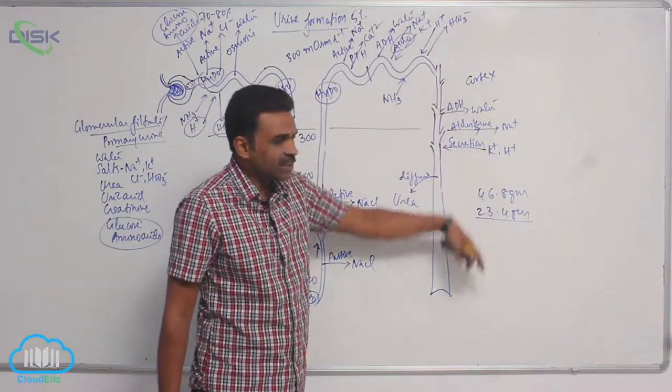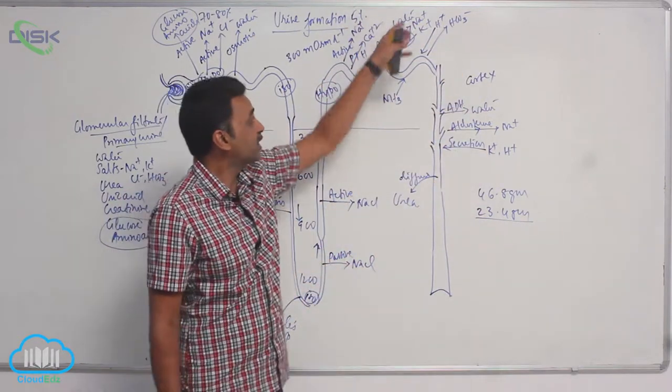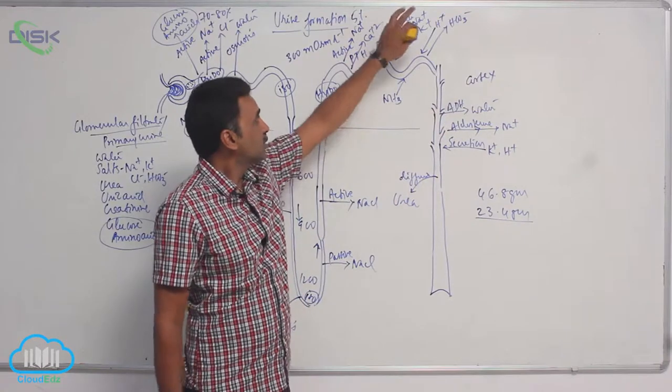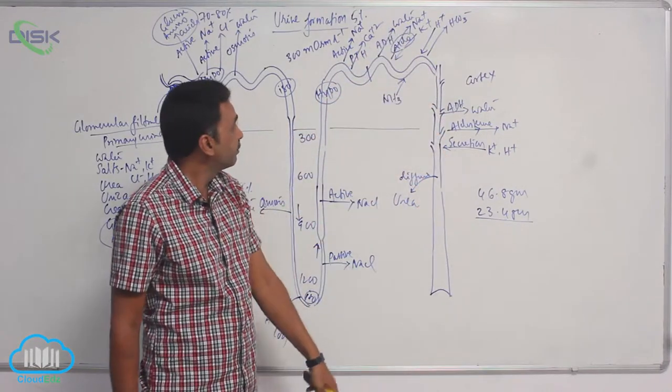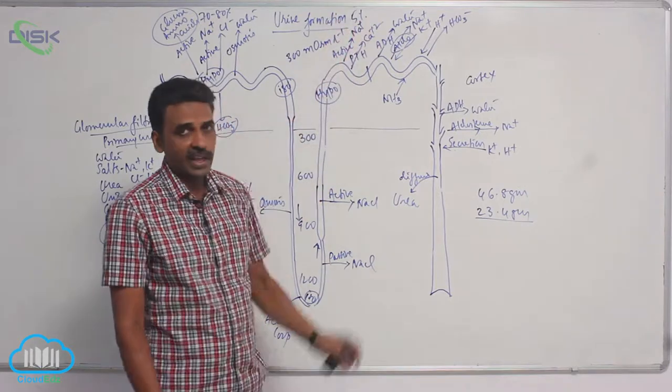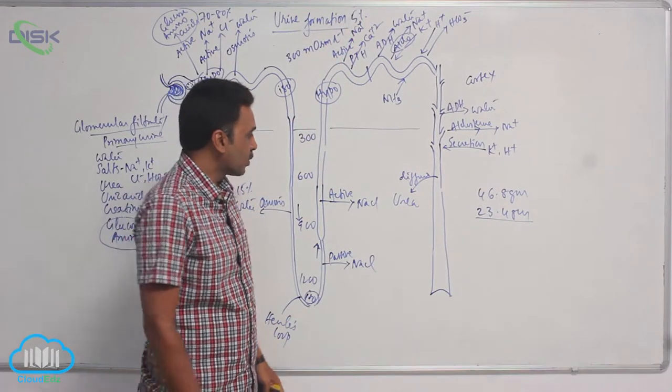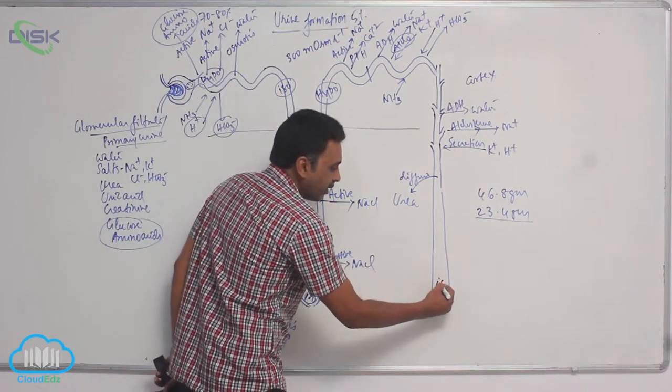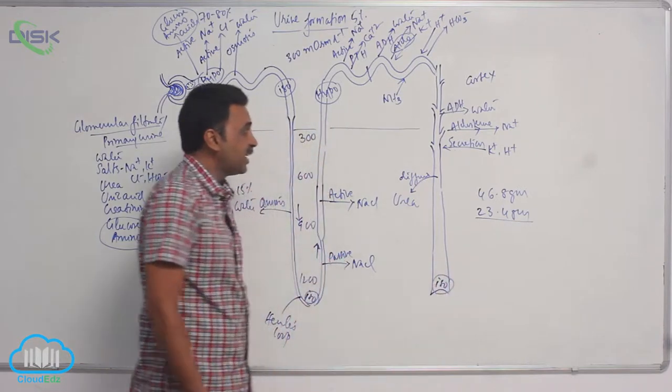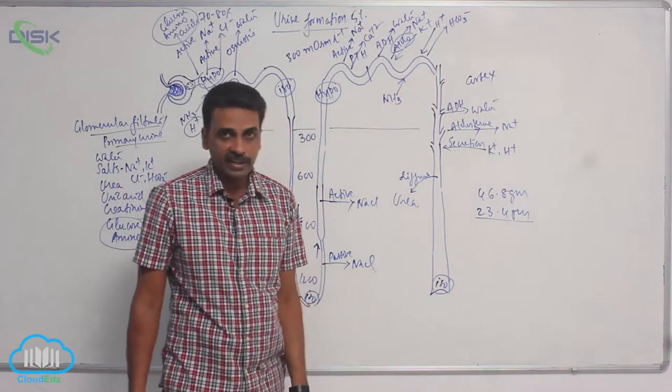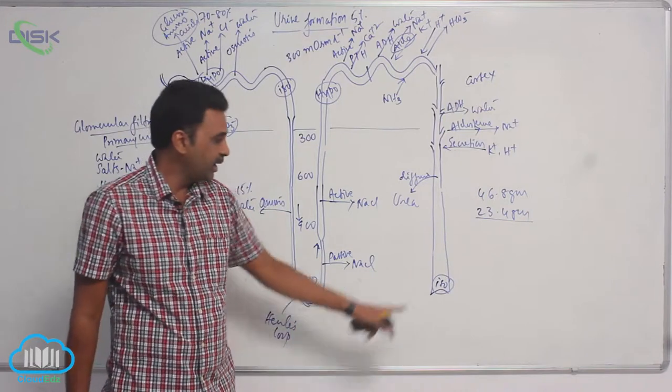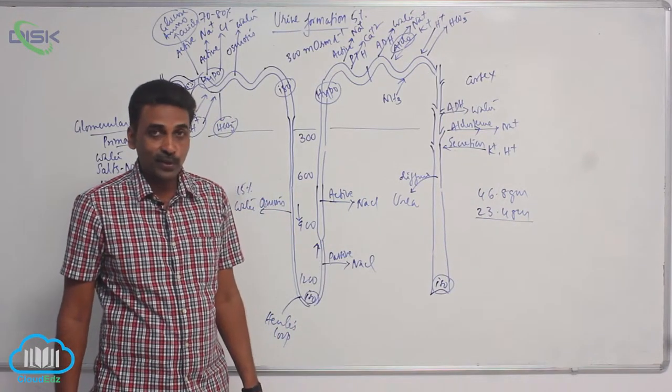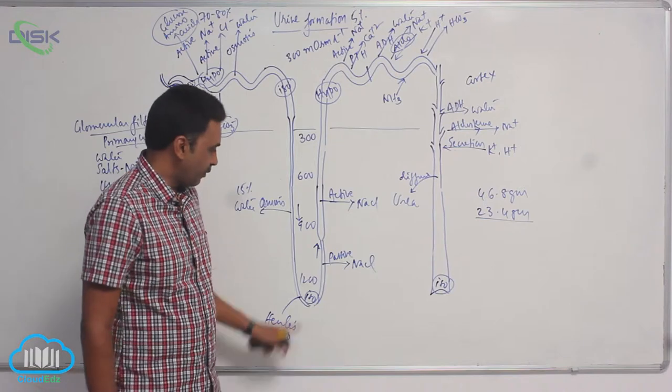After all these things have happened—lots of water is taken out, sodium taken out, potassium added, and some other substances like calcium are taken—by the time it has reached the lower part of the collecting duct (duct of Bellini), it has again become isotonic to medullary fluid. The concentration in medullary fluid is 1200 milliosmolals per liter.